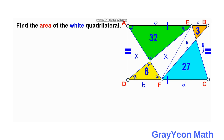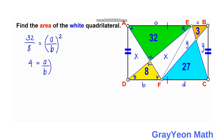For the green triangle the area is 32 and for the yellow it is 8. The area scale ratio is 32 divided by 8, which equals 4, and that equals (a/b) squared. Taking the square root of both sides gives 2 = a/b, so a is equal to 2b.